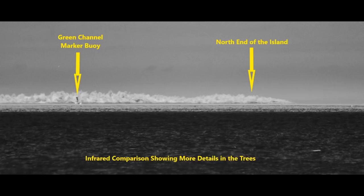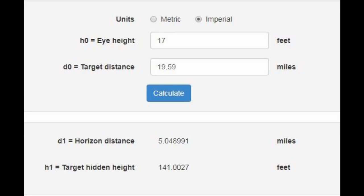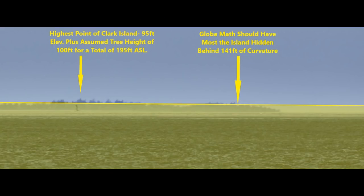Infrared definitely makes a difference when it comes to showing detail, as seen when we compare these two images. Now using an earth curve calculator with an observer height of 17 feet and a target distance of 19.59 miles, we get a hidden target height of 141 feet. The island has a maximum land height of 95 feet per Wikipedia plus a maximum tree height of approximately 100 feet, so worst case scenario the island is approximately 195 feet tall at its highest point. That means only 55 feet of treetops would be visible above the horizon.